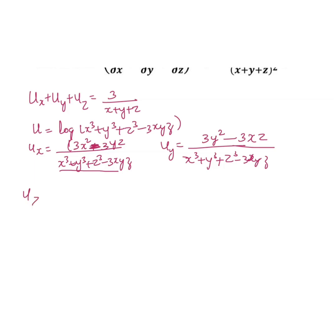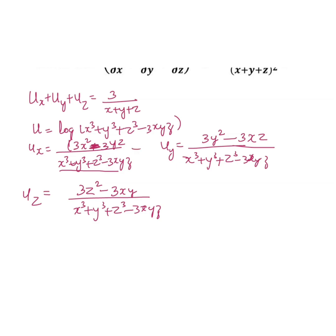Now partially differentiating with respect to z: again the denominator is (x³ + y³ + z³ − 3xyz). The differentiation of z³ gives 3z², and −3xyz gives −3xy since z differentiates to 1, and x and y remain as is.